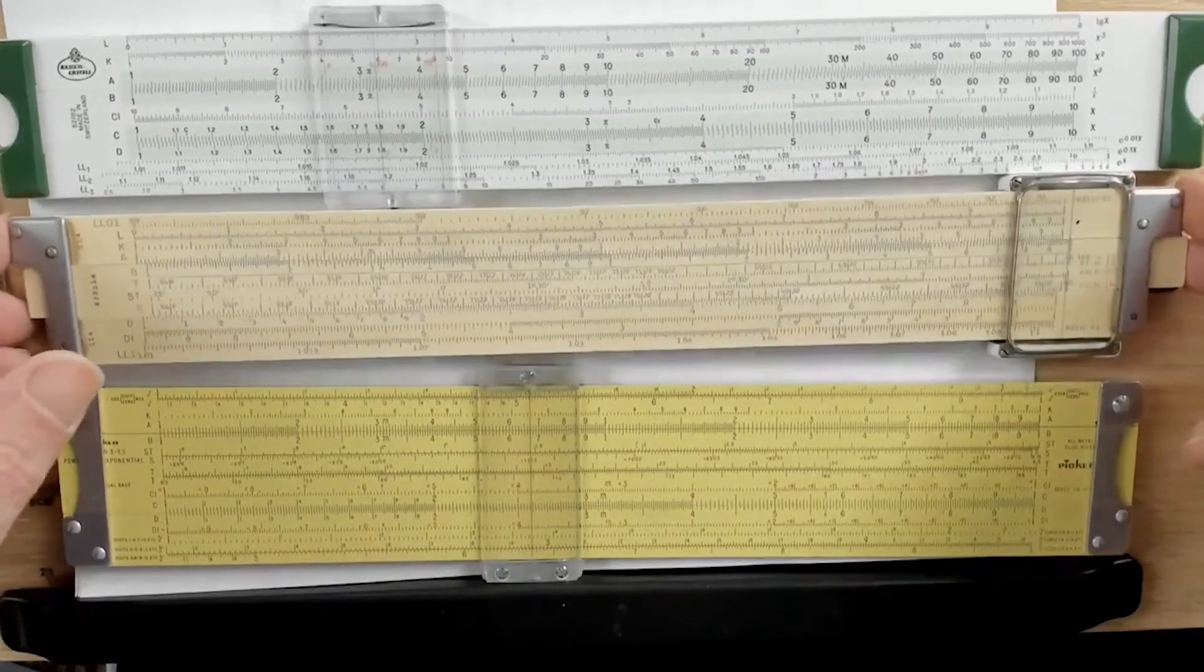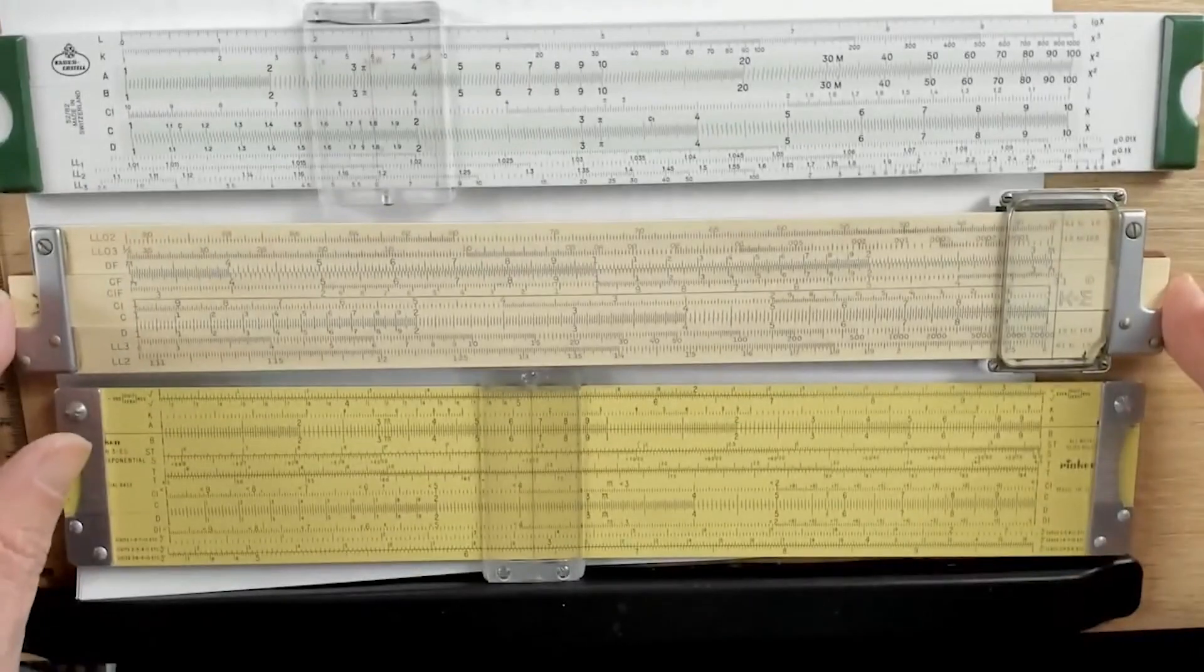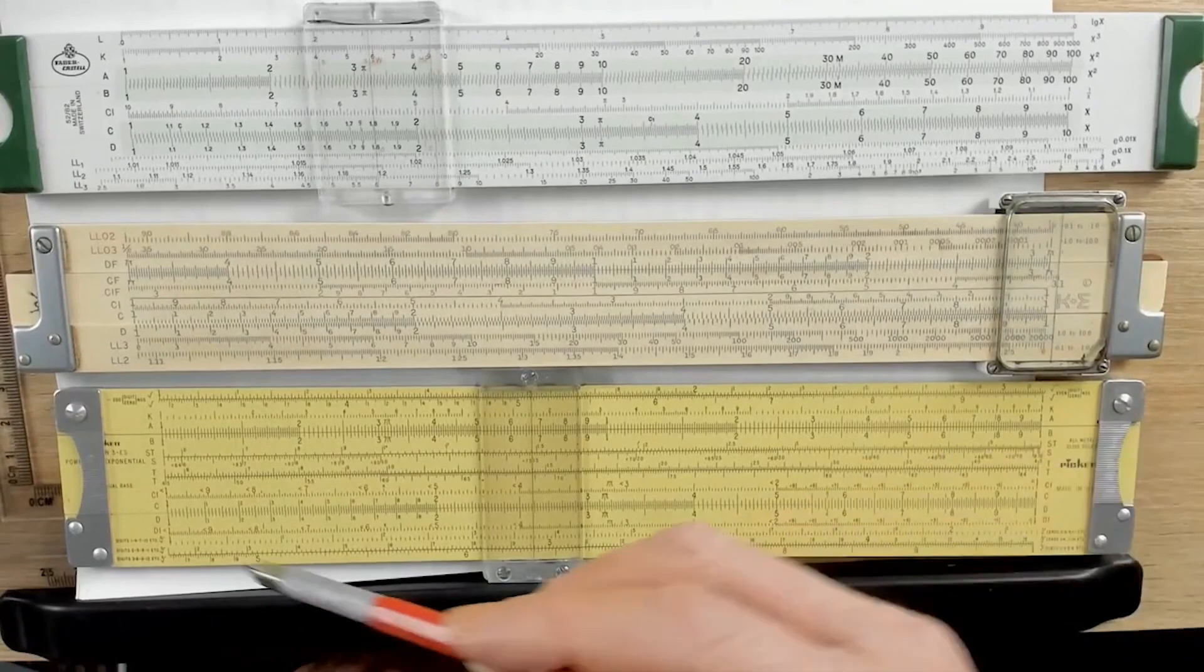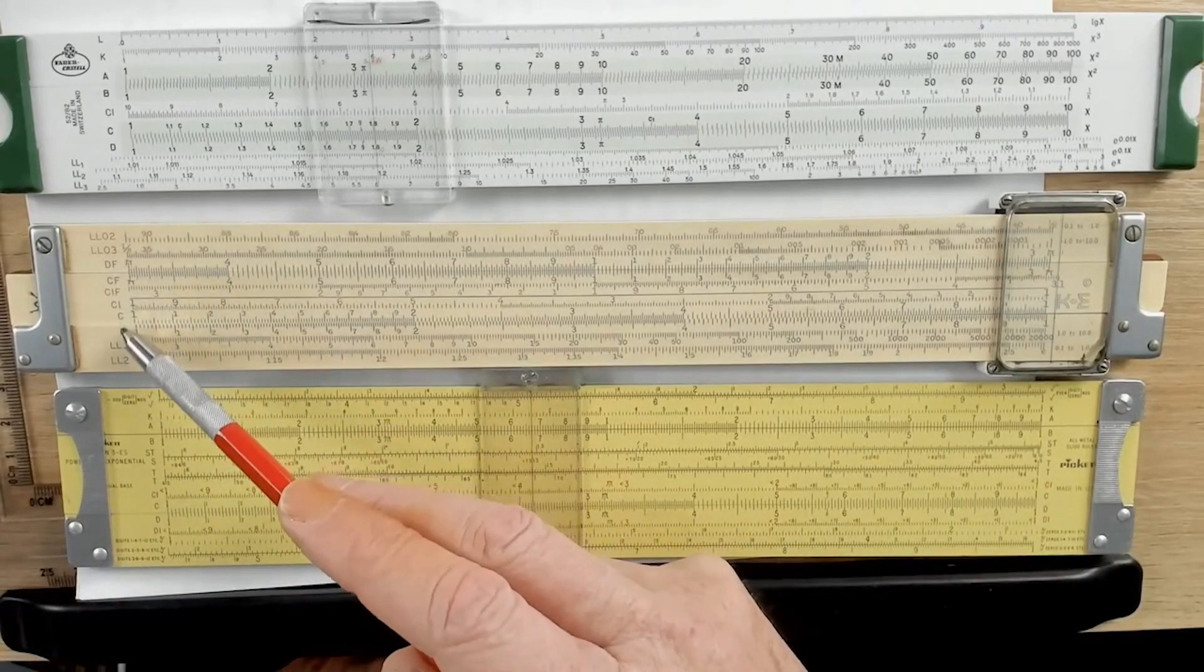Now, this is what's called a duplex slide rule, which means that if you flip it over, there's a whole other slide rule on the other side. Here are more of those log-log scales. There's your C and the D scale.